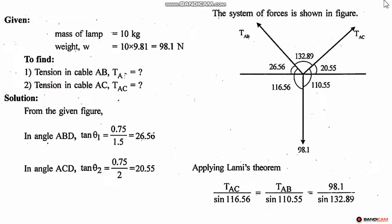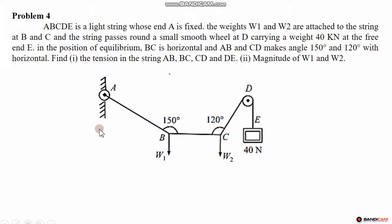Next is a connected body problem — a slightly more complex problem. A, B, C, D is a light string whose end A is fixed. Weights W1 and W2 hang at points B and C respectively, attached to the string. There is a small smooth wheel at point D, which is frictionless.